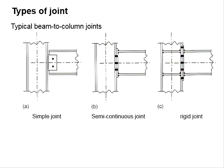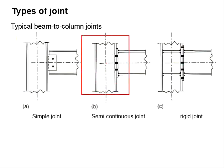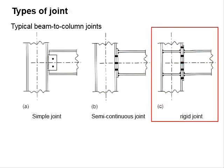These are typical beam-to-column joints, namely the simple joint, which is also known as the pin joint, semi-continuous joint, which is also known as semi-rigid joint, and rigid joint.